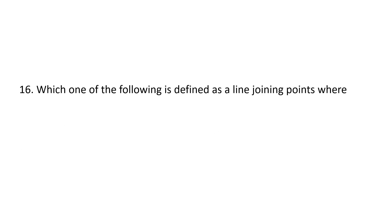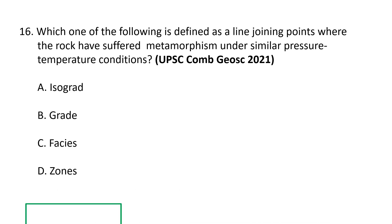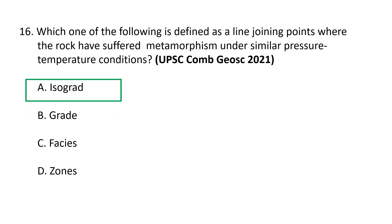Question 16: Which one of the following is defined as a line joining points where rocks have suffered metamorphism under similar pressure-temperature conditions? (a) isograd, (b) grade, (c) facies, or (d) zone. The correct option is A — isograd, which is a line joining points where rocks have suffered equal or similar metamorphism under similar pressure-temperature conditions.